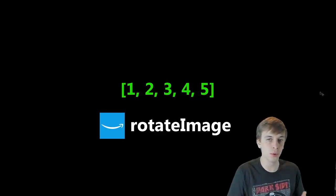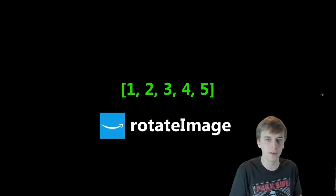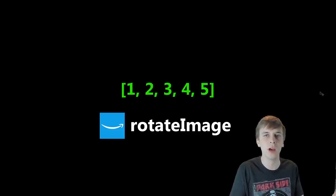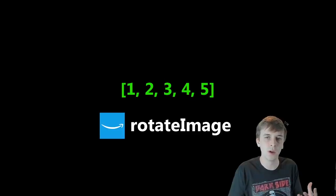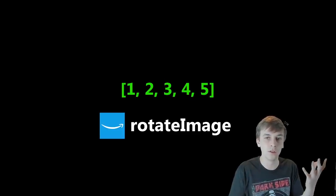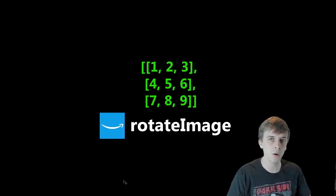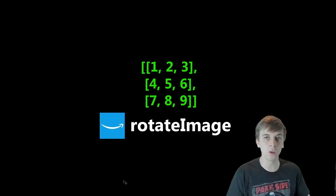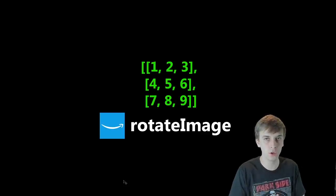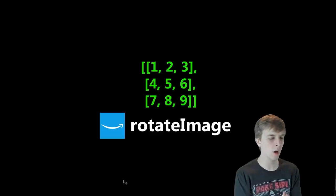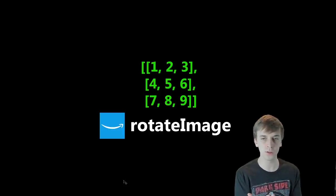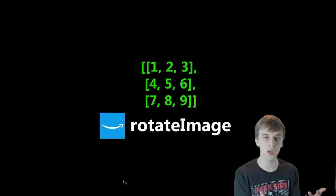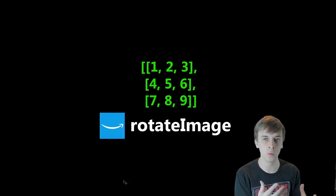So if you've done any coding or programming before, I'm sure you've worked with arrays or at least know what they are. Basically just a data structure that holds values. You can see in the example we have an array holding the values 1, 2, 3, 4, 5. In this particular problem, we're going to be working with 2D arrays, two-dimensional arrays, also referred to as a matrix. And in this particular problem, it's referred to as an image — the image is going to be the 2D array we're working with.